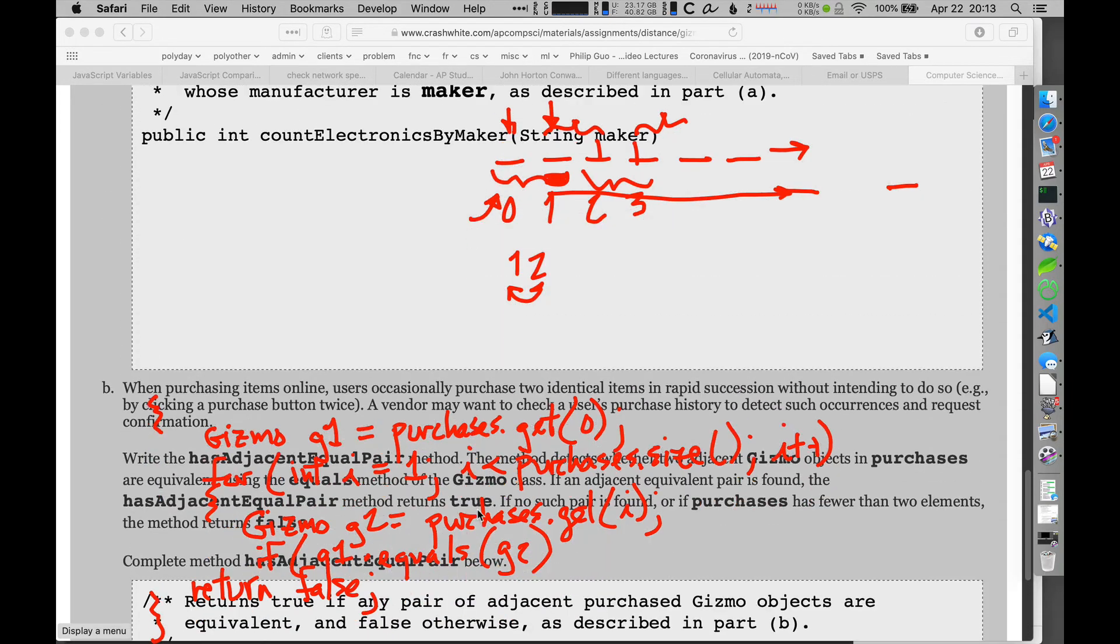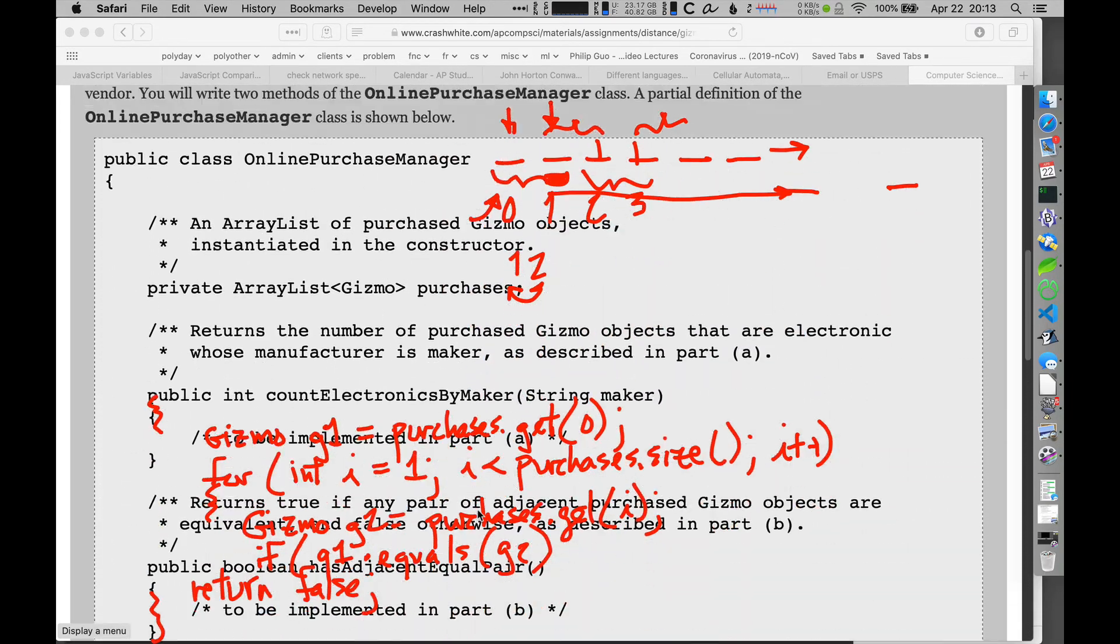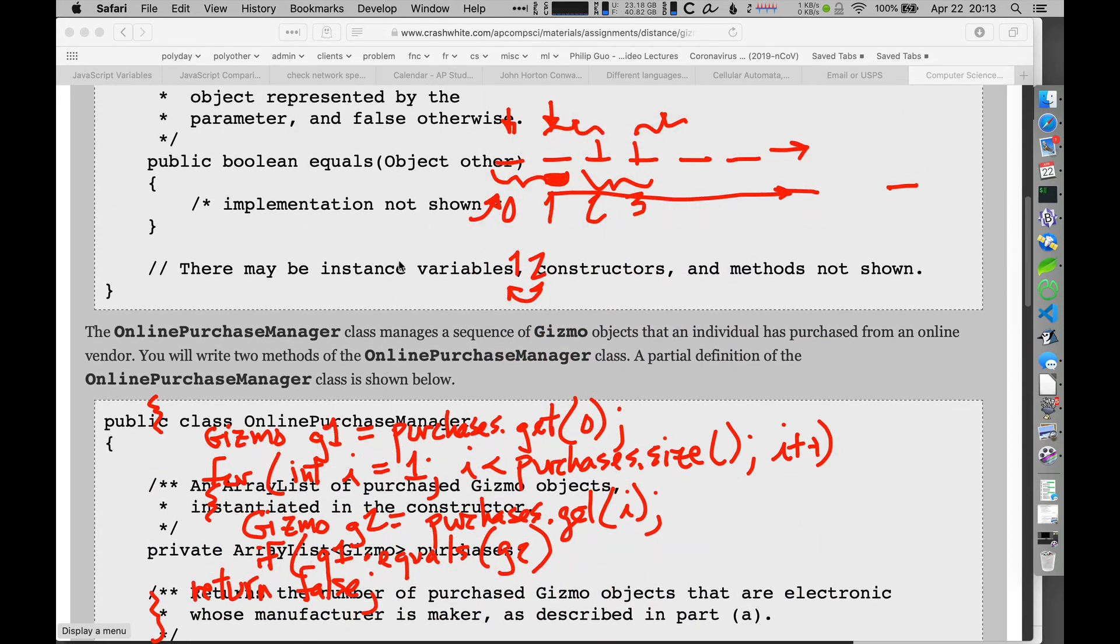And I'm allowed to do that. I don't know if you remember this, but I'm allowed to do that because the equals method was defined up here. If you take a look at equals right here, we define this equals method that allows us to compare two different gizmo objects.